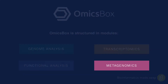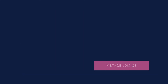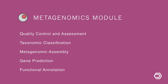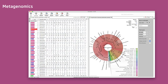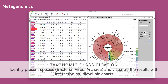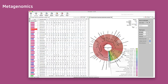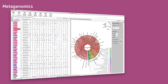The Metagenomics module offers all major steps for a complete microbiome analysis. The first step is quality control, followed by taxonomic classification. The available tools allow to perform species-level taxonomic classification for 16S as well as whole genome shotgun datasets. The integrated visualizations show differences between samples and groups.